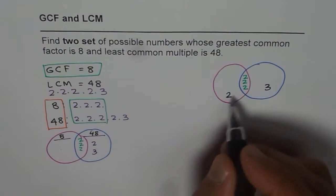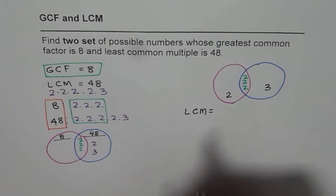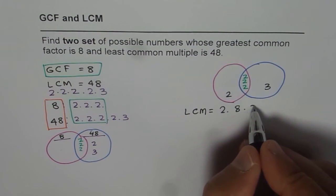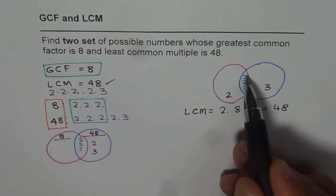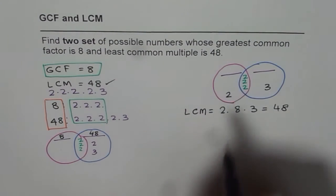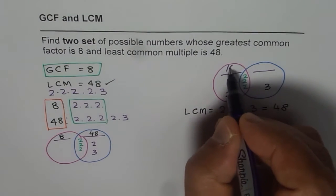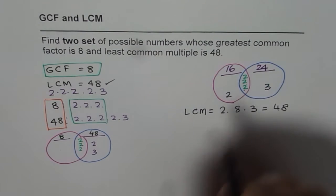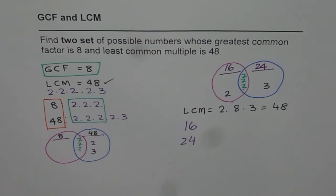You can place, for example, 2 here and 3 here. In this case, the least common multiple will be the product of all of these, which is 2 times 2 times 2 — that is 8 — times 2 times 3, which is 48. That is what we wanted. And the greatest common factor we have already taken as 2 times 2 times 2 which is 8. Now you have to figure out what the two numbers are. The number on one side is 2 times 2 times 2 times 2, that means 8 times 2, which is 16. And the number on the other side is 8 times 3, which is 24. So the two numbers we got are 16 and 24, and that becomes the second set of numbers.